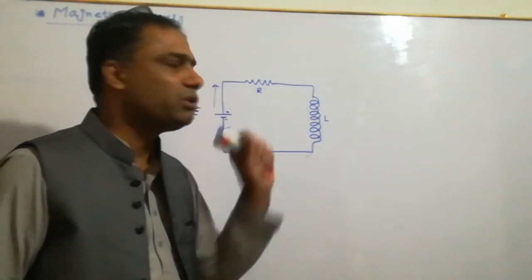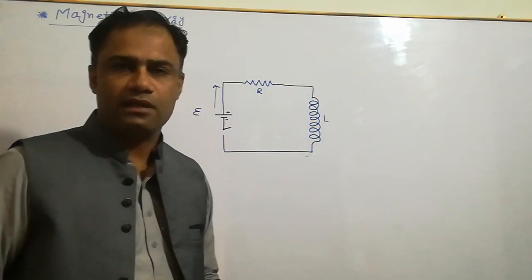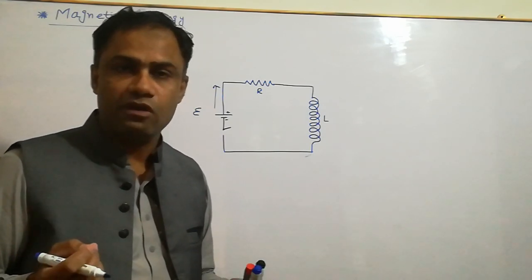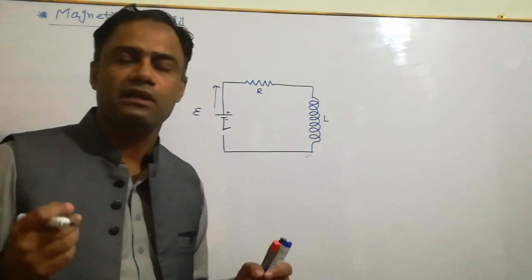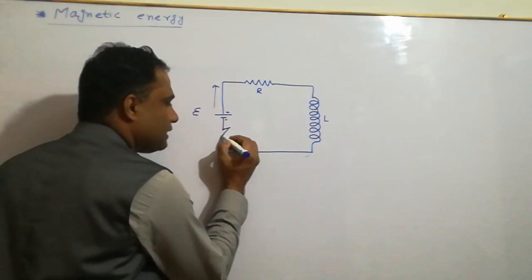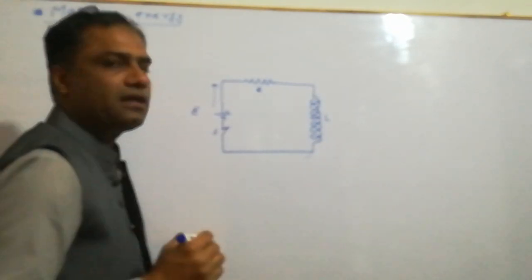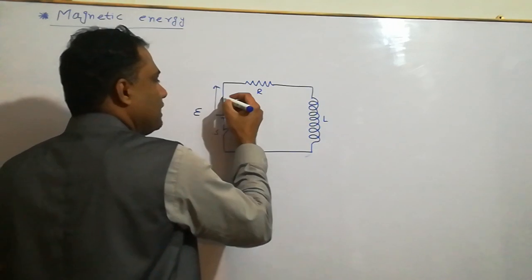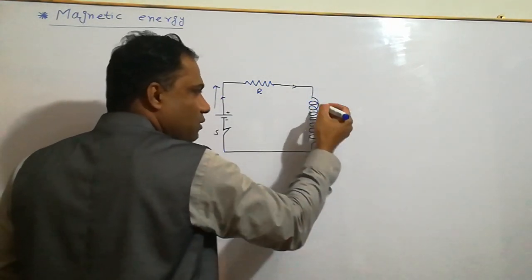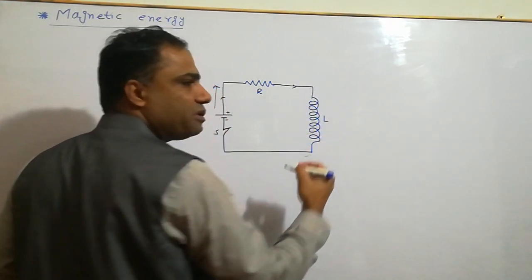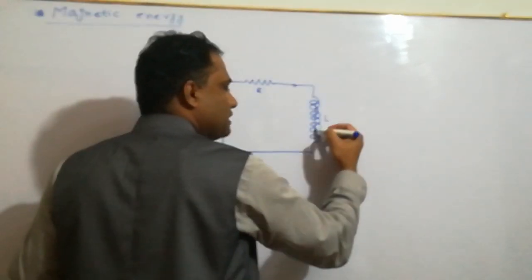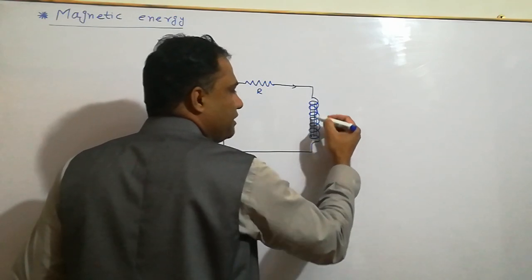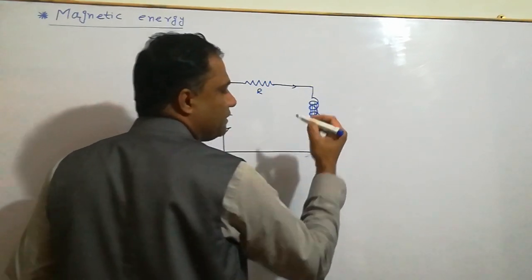When the switch is open, the current is zero and the magnetic field is zero. The magnetic flux is not changing, so no EMF is induced. When we close the switch, the current will change and the magnetic field will be produced. If the magnetic field changes, the flux changes.